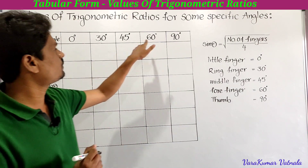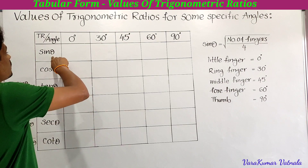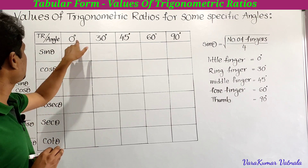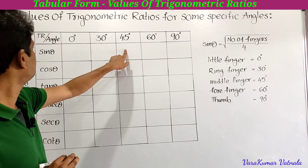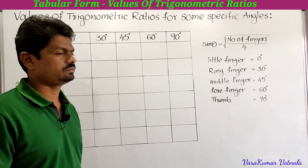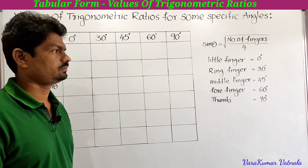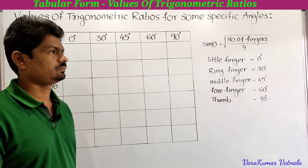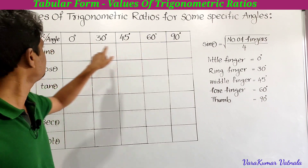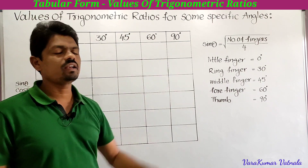Here we have 0, 30, 45, 60, 90 degrees. For sine 0, sine 30, sine 45, sine 60, sine 90 — we have to write all the values for the sine trigonometric ratio for these specific angles. First we have to write the values of sine for these specific angles.